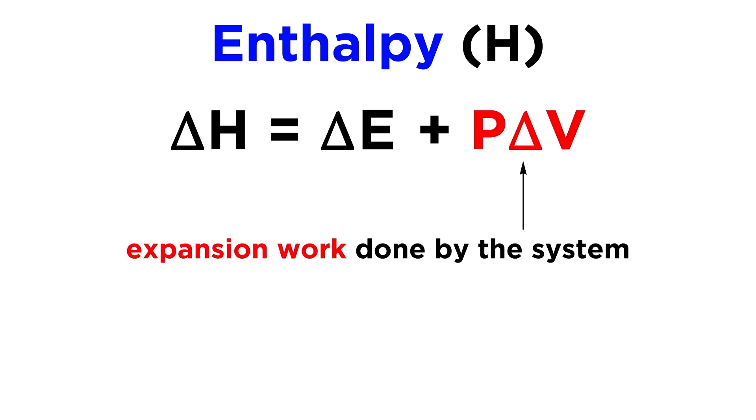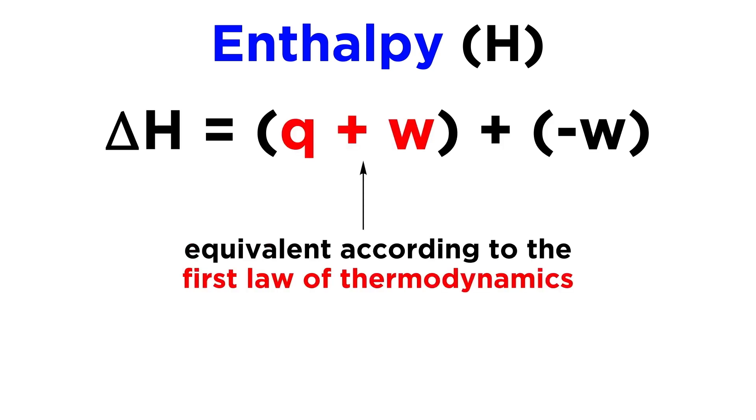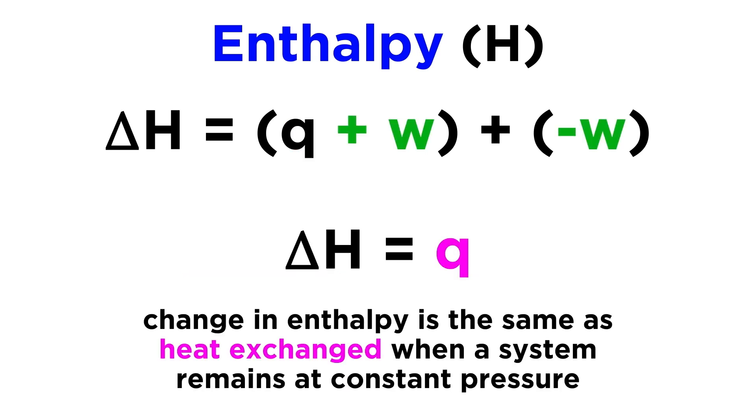Now P delta V represents the expansion work done by the system. This expansion work can be represented by negative W since it is work done by the system, and internal energy can be replaced with Q plus W, as those are equivalent according to the first law of thermodynamics. So we can see that enthalpy can be considered to be the same as heat exchanged when the system remains at constant pressure.